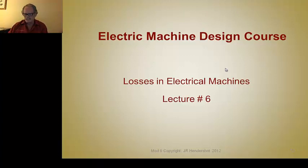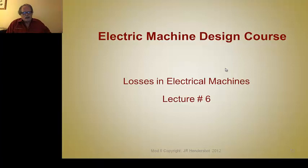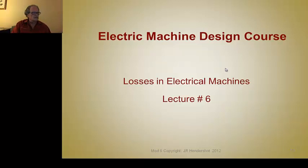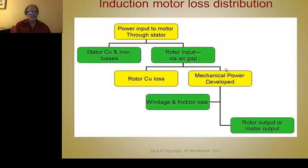The efficiency of the machine is based on the output power versus the input — what percentage of the input power is transferred, transposed, or converted into mechanical power. That process is the efficiency. What reduces or increases efficiency has to do with the losses in the machine. So how are the losses distributed in a motor?